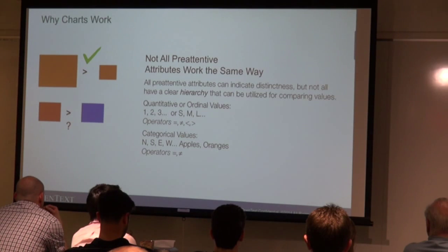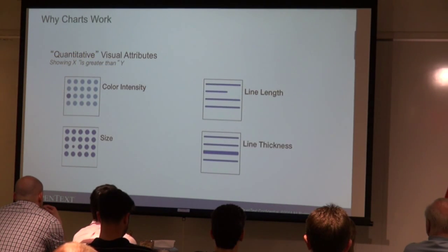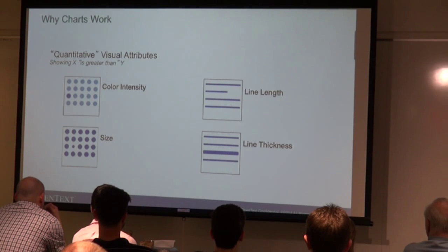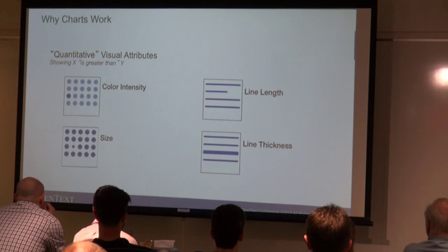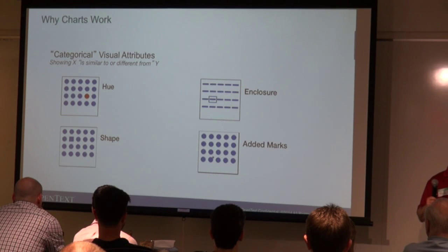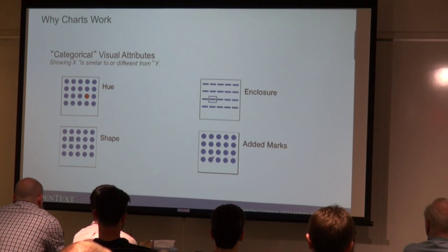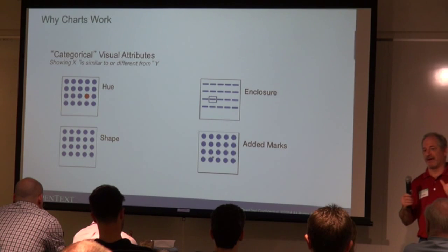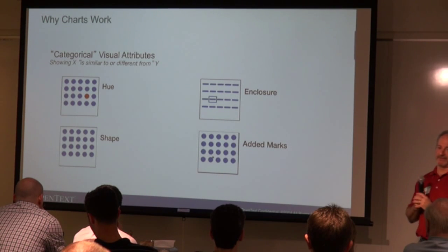More detailed examples: quantitative things could be color intensity, size, line length, and line thickness. Categorical things would be hue or shape — these are things that are just different. Enclosures or added marks are used to define something that is different.